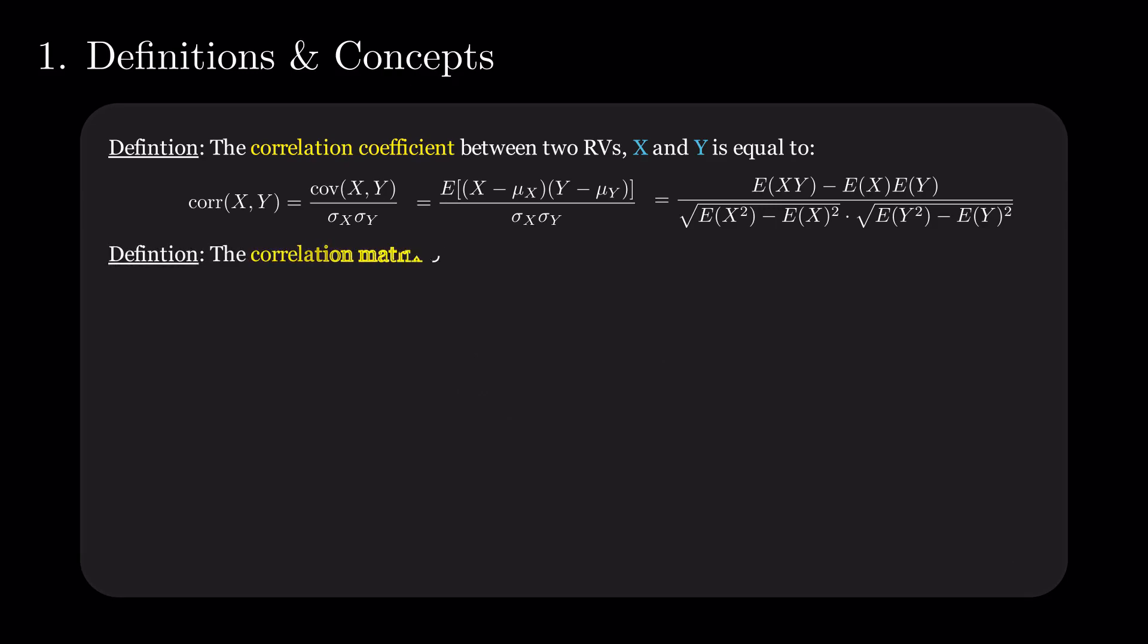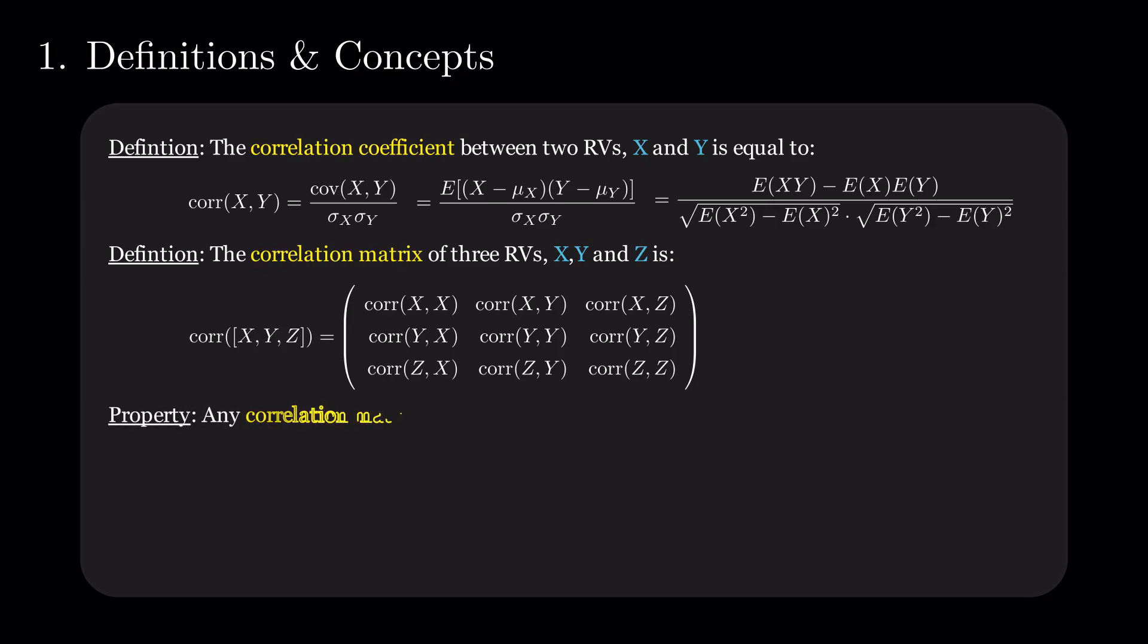We define the correlation matrix of three variables, with the possibility to generalize to more, as the matrix with elements the pairwise correlations of the variables.